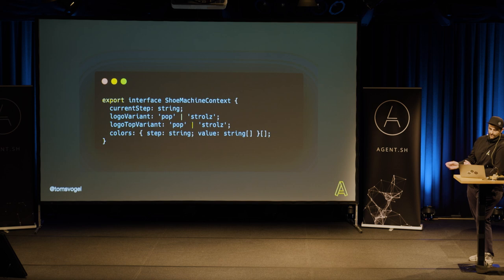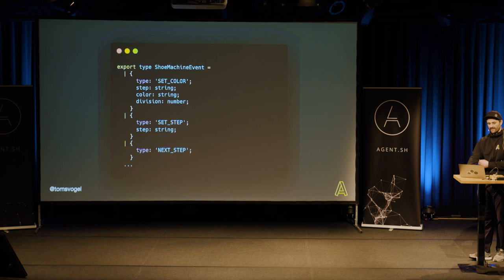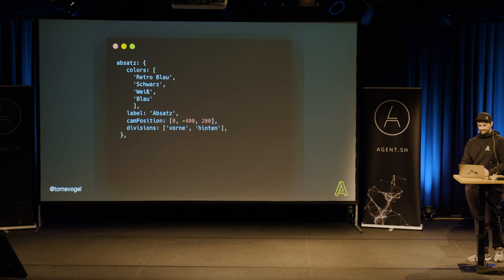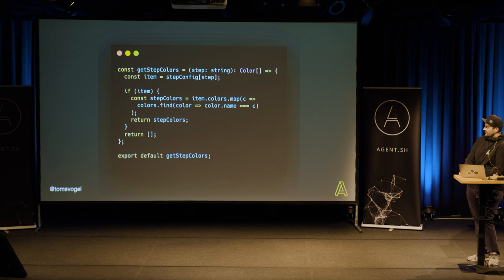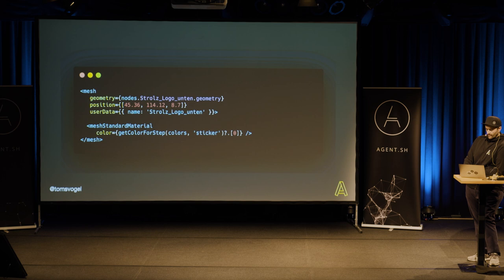This is the context of the shoe machine — we are keeping the current step, logo variant on top, logo variant bottom, and the colors for each step. We have some events: set color and set step with some parameters. Pretty straightforward. We have a configuration for each step, and then we use some helpers — get colors, get camera position for each step — and apply that to the model.